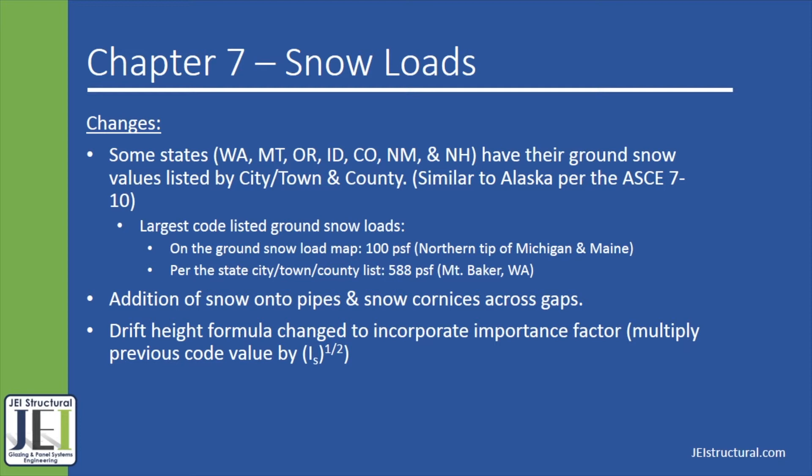Another thing added in the 7-16 is that the drift height has been modified by a factor to adjust for risk category. This factor is a minimum of 0.9 for risk category 1 buildings and a maximum of 1.1 for risk category 4 buildings.